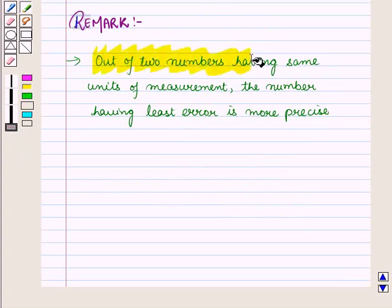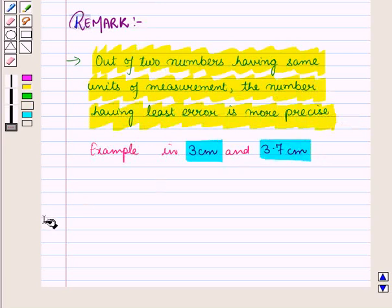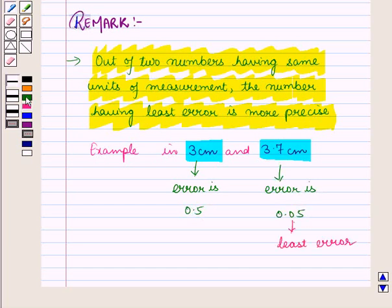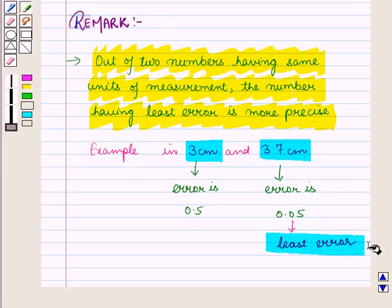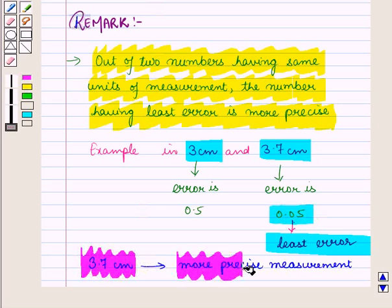Out of two numbers having same units of measurement, the number having least error is more precise. For example, in 3 centimeters and 3.7 centimeters, error in 3 is 0.5 and error in 3.7 is 0.05. Now the least error is in 3.7 centimeters, so it is more precise measurement.